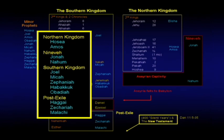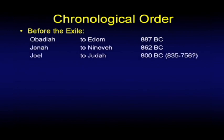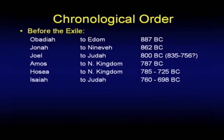That's an order we think is a little more logical in terms of who they're addressing. The chronological order — before the exile — Obadiah spoke to Edom about 887 B.C. That's very early. Jonah to Nineveh about 862. These are Ussher's dates, not the last word, but a comfortable reference. Joel addresses himself to Judah primarily around 800 B.C., somewhere between 835 and 756. Amos takes his message to the northern kingdom about 787. Hosea, just about that same time.